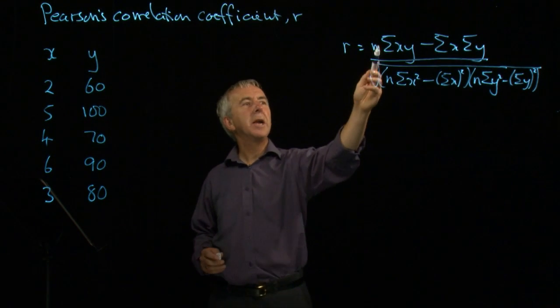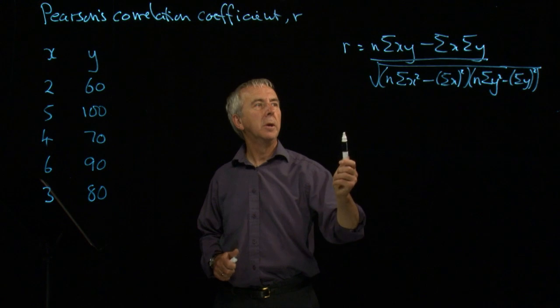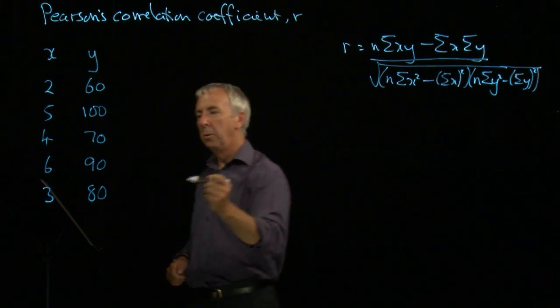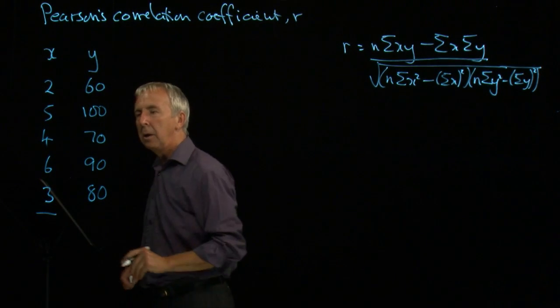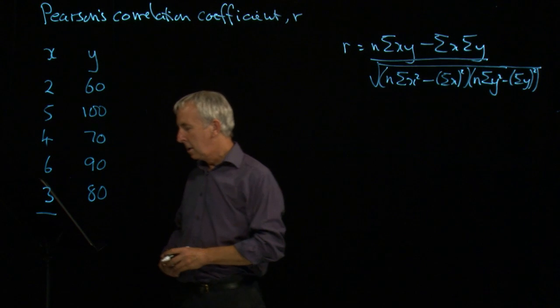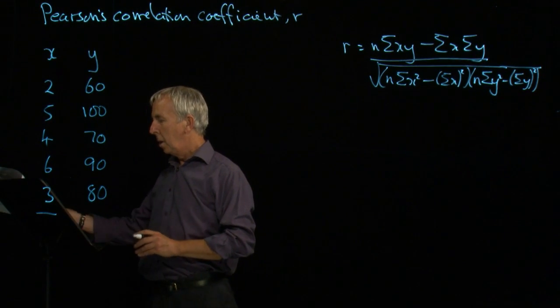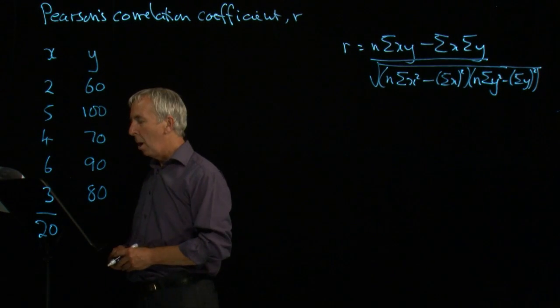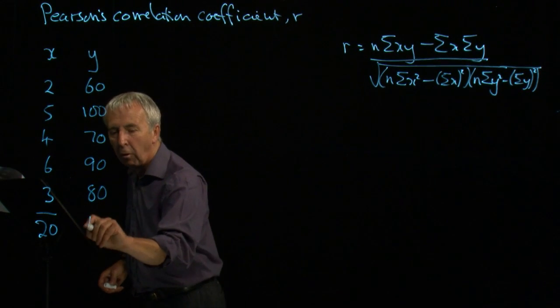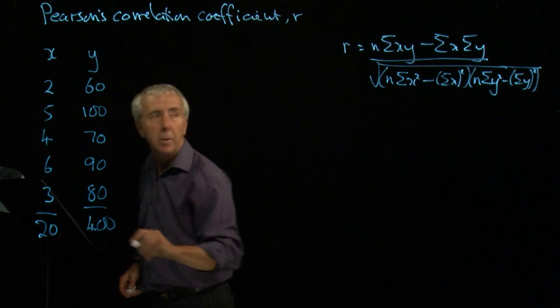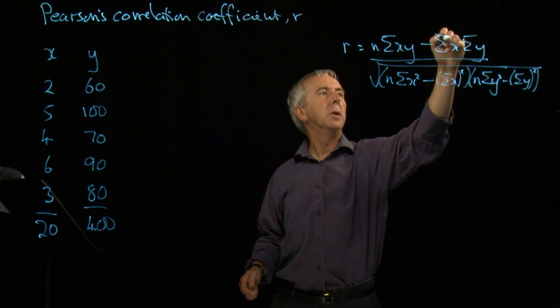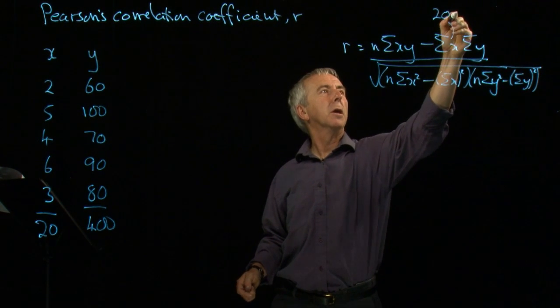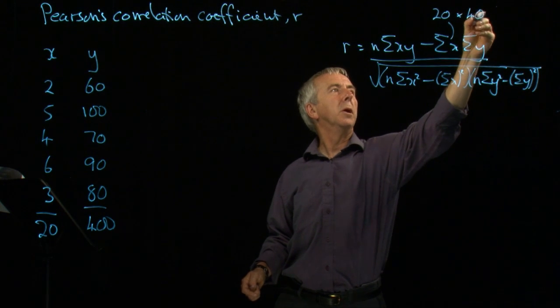And what it consists of is adding up various columns of figures. So the sum of x, for example, we would get here by adding up the x's, and they come to 20, and the sum of the y's comes to 400. So in here, this bit will be 20, and this bit will be 400.